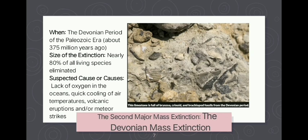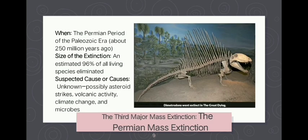The second wave of the Devonian mass extinction is more of a mystery. It could have included mass volcanic eruptions and some major strikes, but the exact cause is still considered unknown.